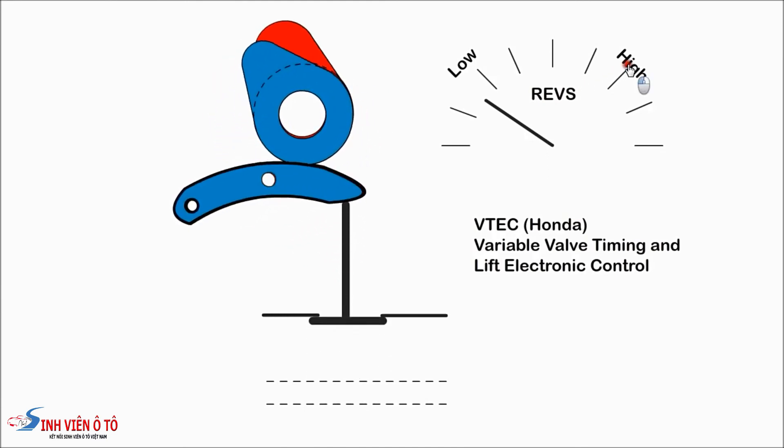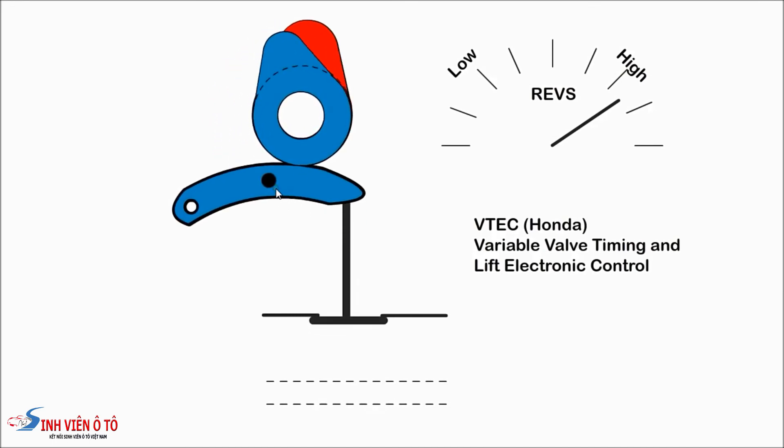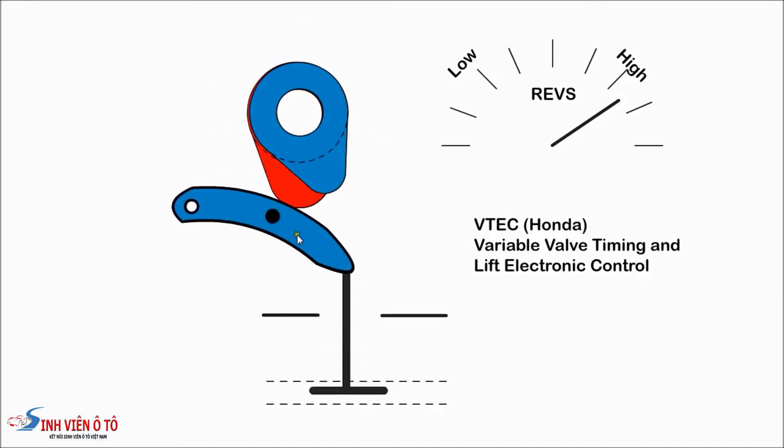At high speed, the pin is activated and the rockers are joined together when they are aligned, thus altering the timing and lift for maximum power.